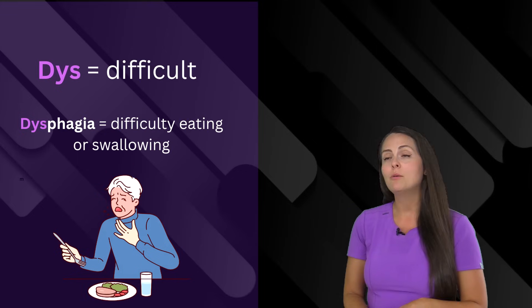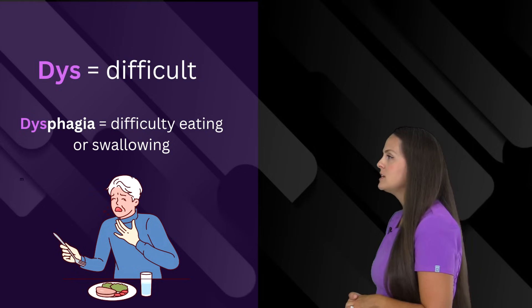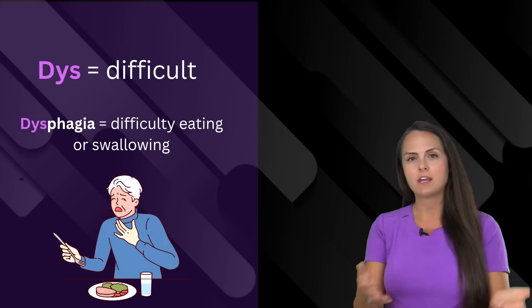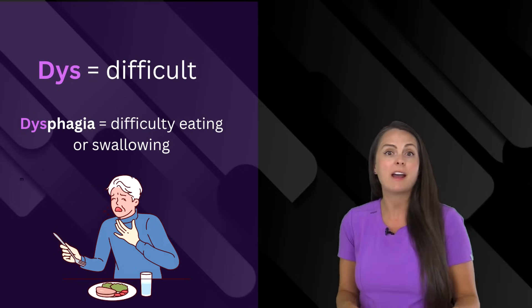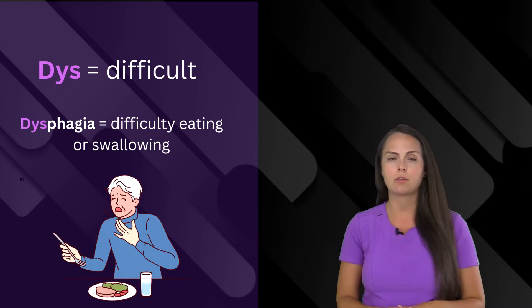And then we have dys, D-Y-S. And this means difficult. So if you say a patient has dysphagia, that suffix part is talking about eating or swallowing. And when we put D-Y-S in front of it, that prefix, that means that they have difficulty swallowing or eating.